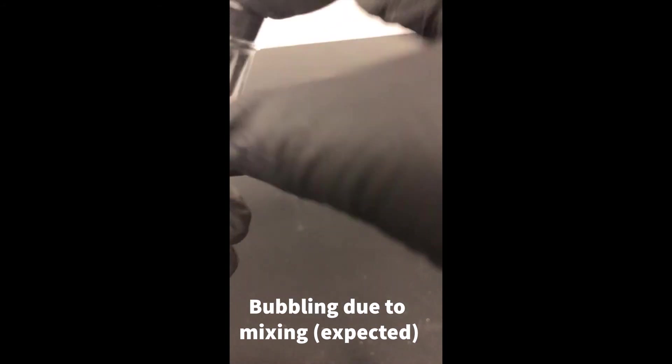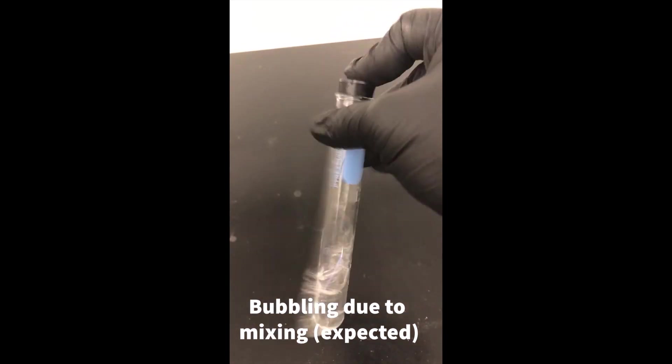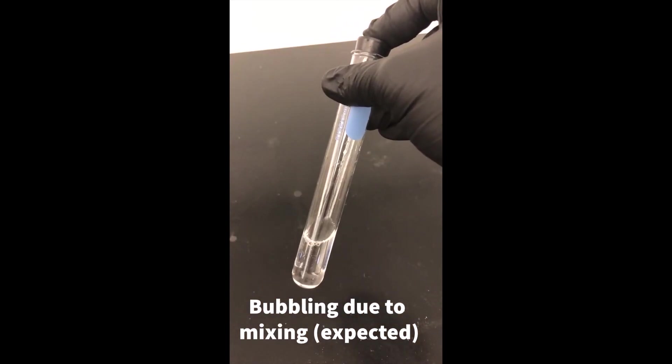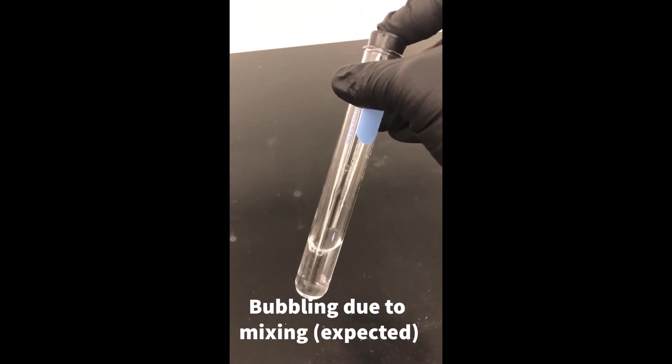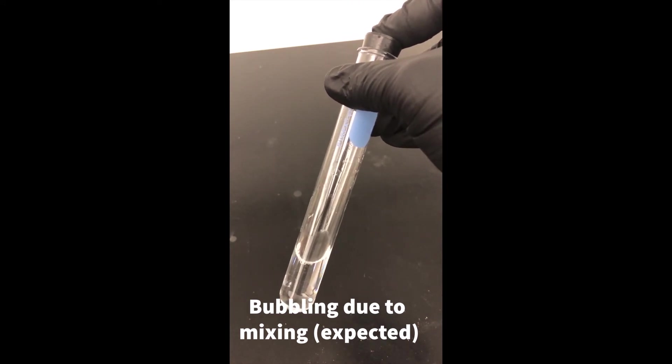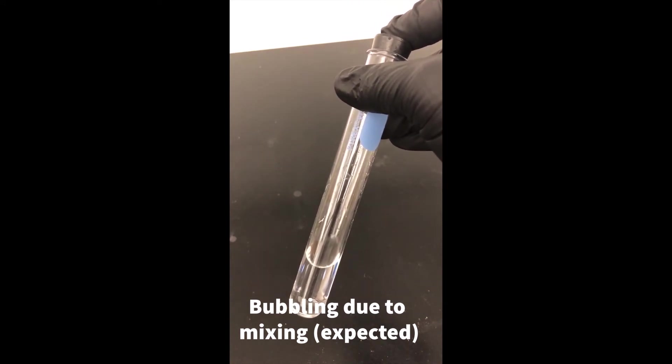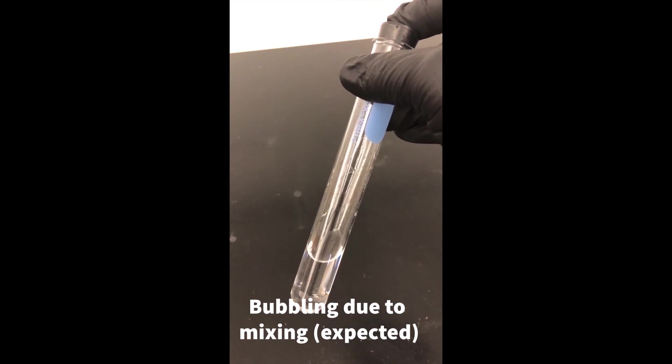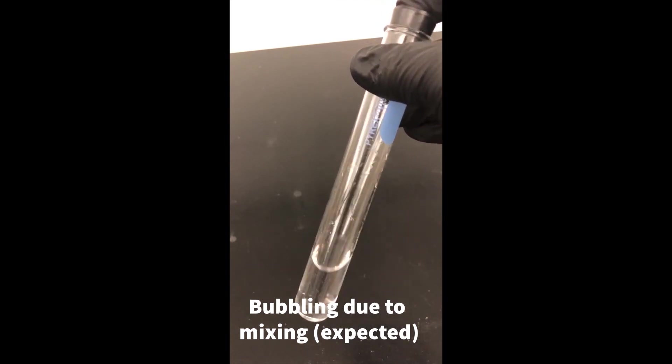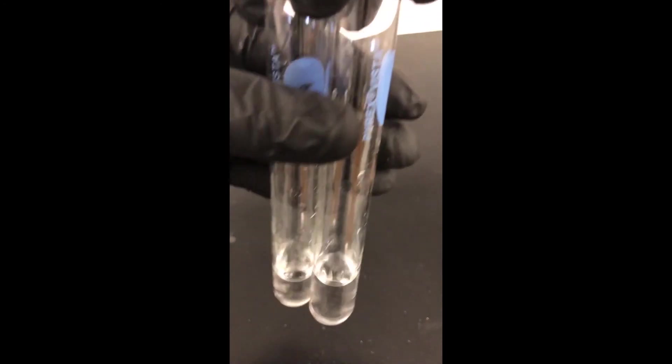—you can see where bubbles formed, right? Well, we expect that, because air got pressured into the liquid and it didn't want to stay there, so it bubbled out. That is an expected type of bubbling. Now let's see what happens in this case. Here I have again two solutions